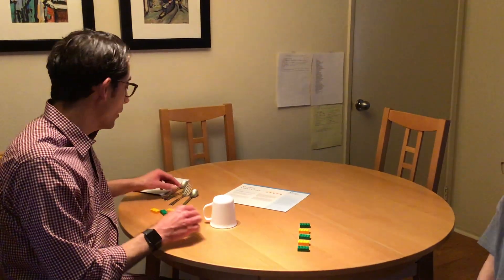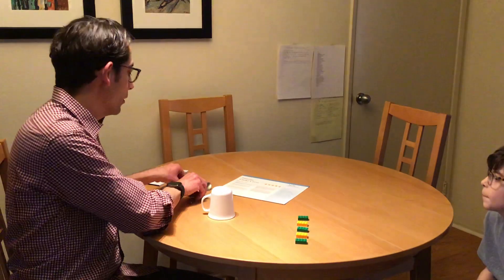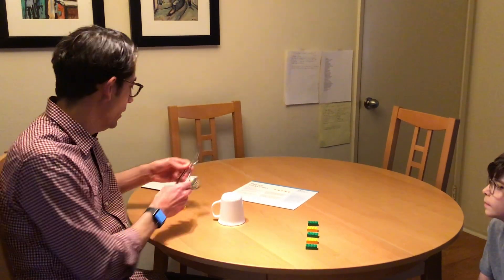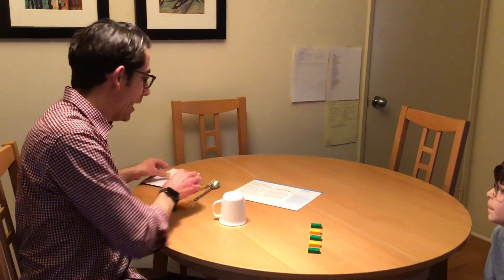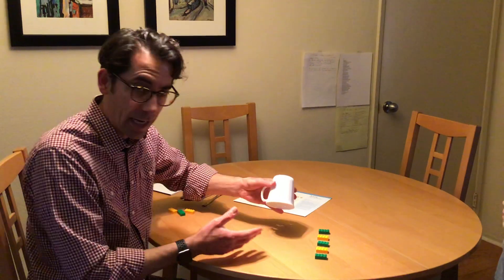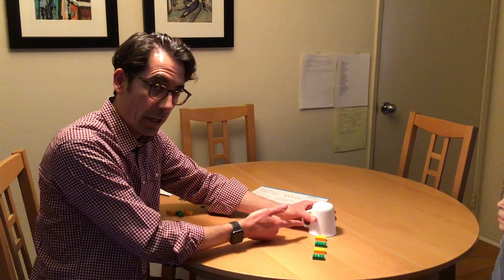That's an example of how you can do it. And you can use other household objects too. Here's another example. Spoon, fork, spoon, fork. Just make sure that they're the same repeating material so that there's no confusion. And try to put the next item in the sequence under cover.